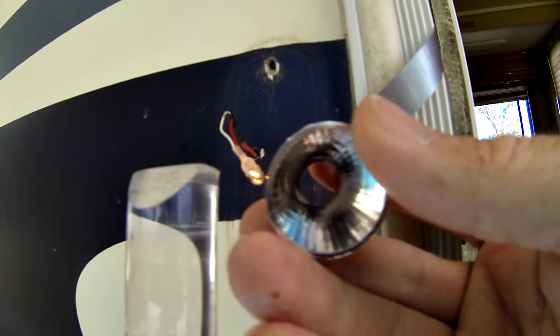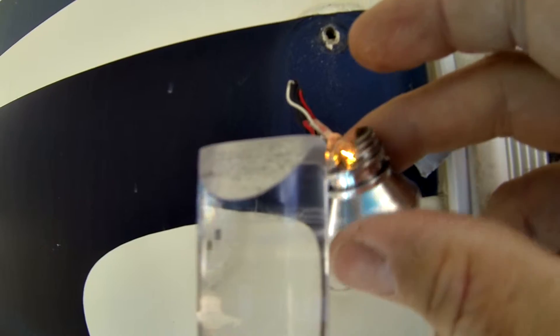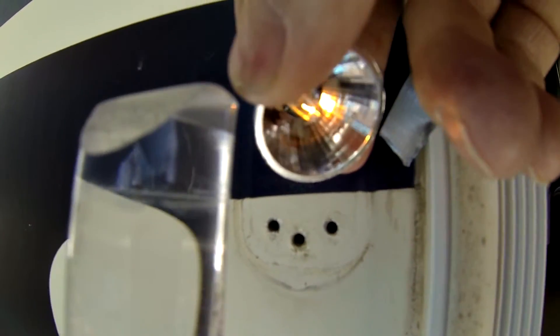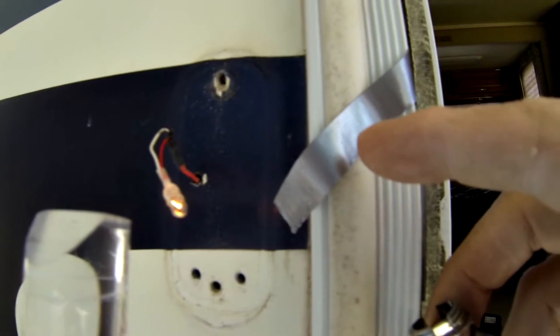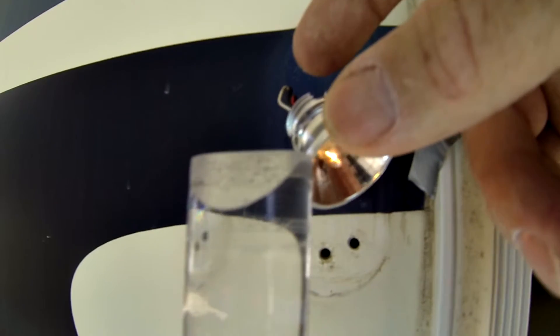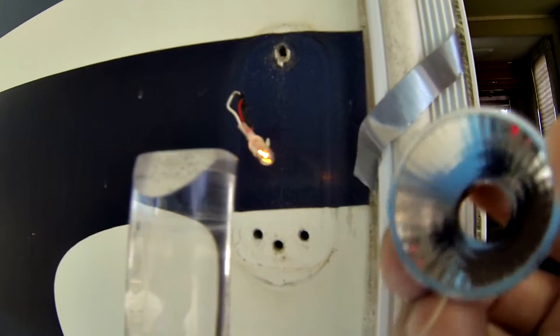This is the flashlight lens. As you can see, the bulb does not fit in there tightly, so I'm going to use a small piece of duct tape to wrap around the back side and see if that'll secure it.